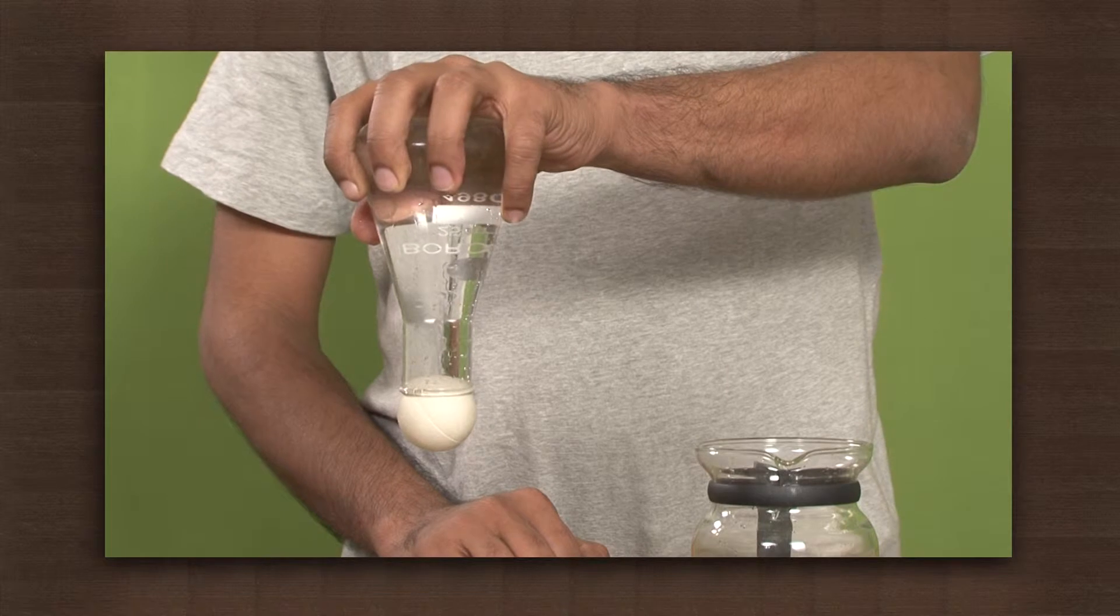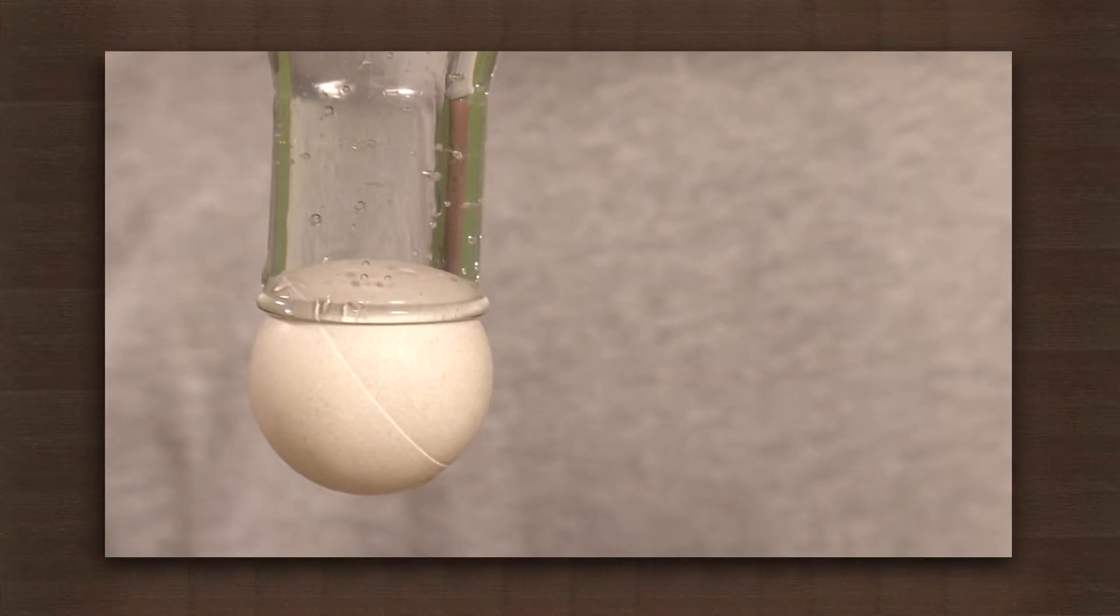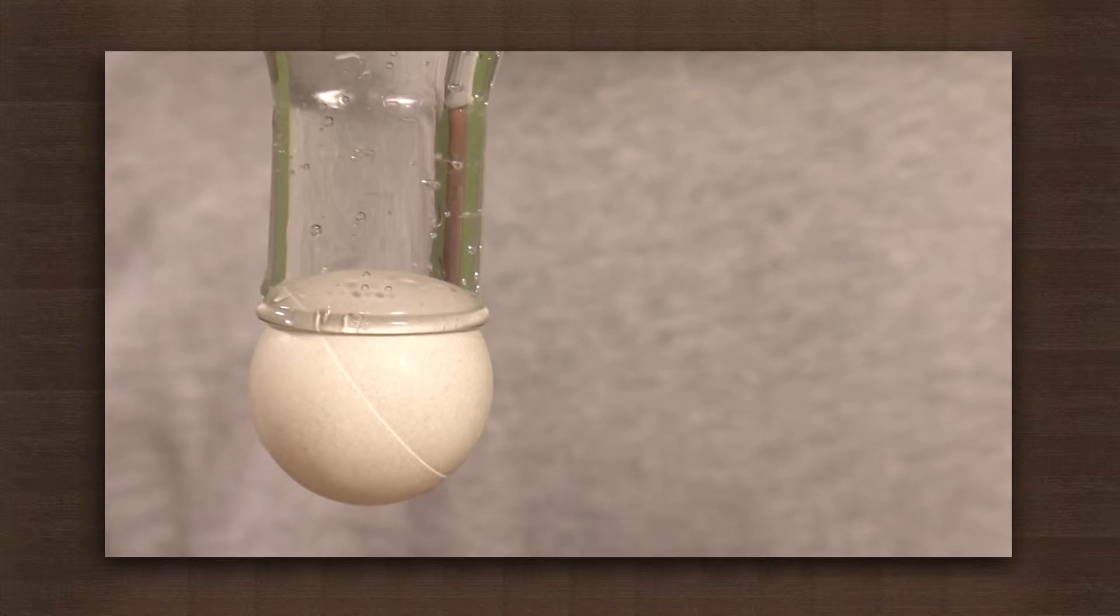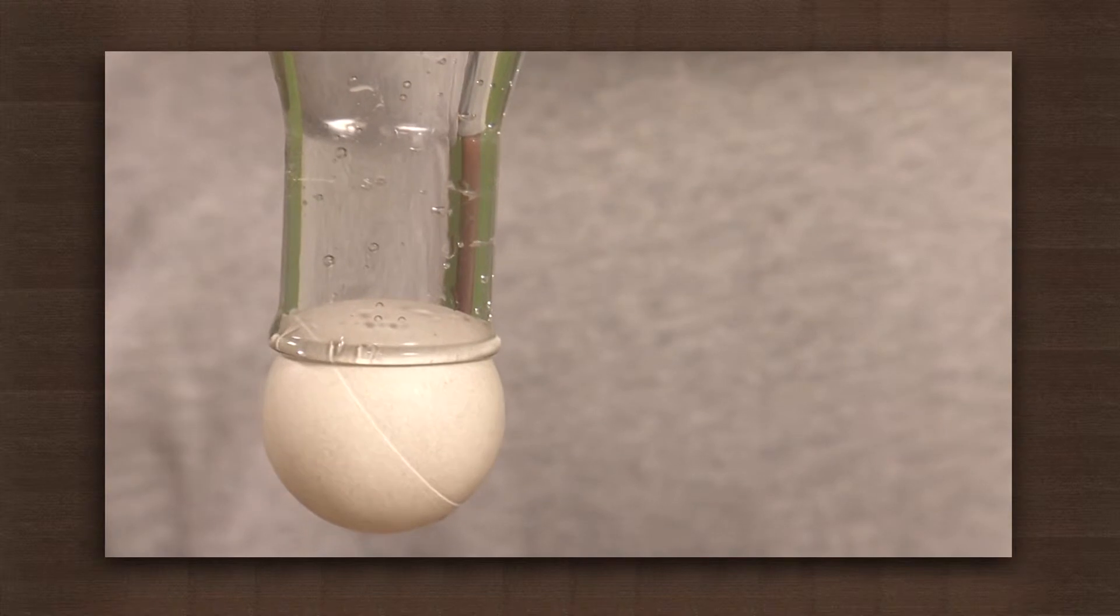Observe, you will see that neither the ball nor the water falls down. It looks like the ball is able to hold the water inside the flask. What keeps the ball in place and the water from spilling out?